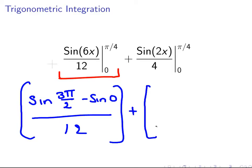And on this side we have sin of 2 times pi over 4. So 2 pi over 4 is pi over 2. And sin of 0 is just minus 0. And that's all over 4.